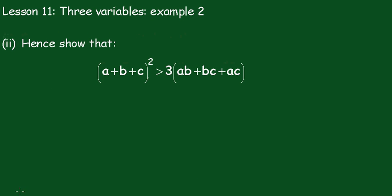And part 2: hence, show that (a plus b plus c) squared is greater than or equal to 3 times (ab plus bc plus ac).